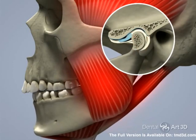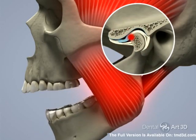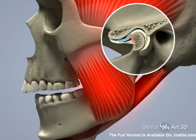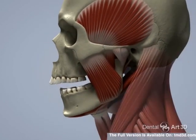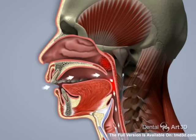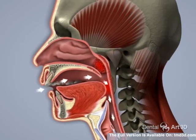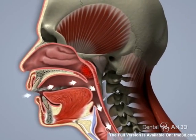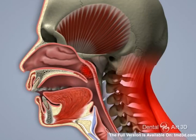As a result, the TMJ disc can get trapped in front of the condyle. While the click may go away, limited mouth opening will occur. A distally shifted jaw and tongue position result in even further restriction of the airway. In order to open up the airway, the neck moves forward and the head tilts backwards. This stresses the spine and fatigues the neck muscles, which results in neck, back, and shoulder pain.